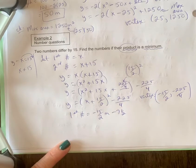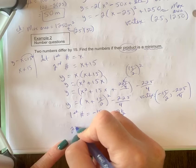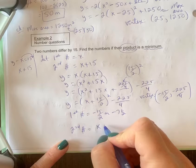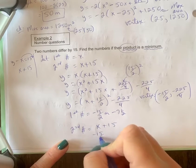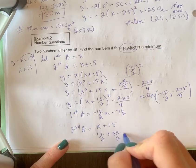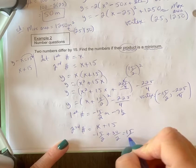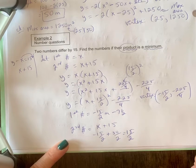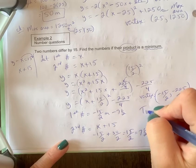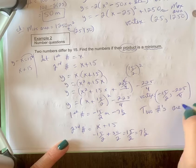The second number is represented by x plus 15, so negative 15 over 2 plus 15. I may as well put that as a common denominator right now, so I get positive 15 over 2, that's positive 7 and a half. So my two numbers are negative 7 and a half and 7 and a half.